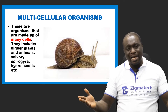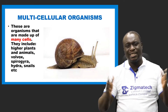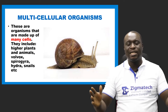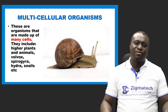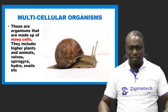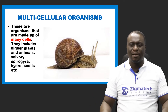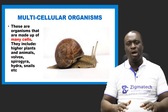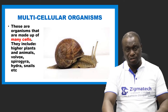Examples of higher animals include you and I — mammals are examples of higher animals. Higher plants include dicotyledonous plants like the mango and orange plant. We also have volvox, hydra, spirogyra, and the snail as examples of multicellular organisms, as you can see on the structure on the screen.